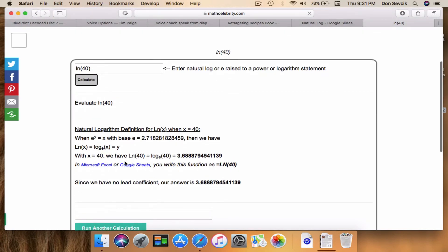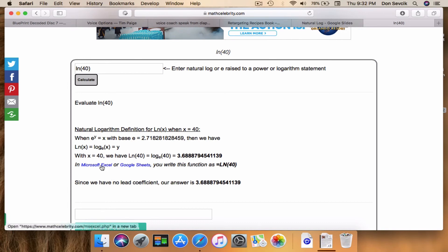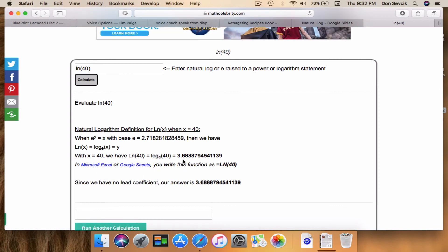As you can see, it walks through the identities that we talked about. So we're trying to find a y such that e to that y equals 40. When we plug those numbers in and work it out, and again I've shown you how to do it in Microsoft Excel or Google Sheets, we get 3.688879 and so on.